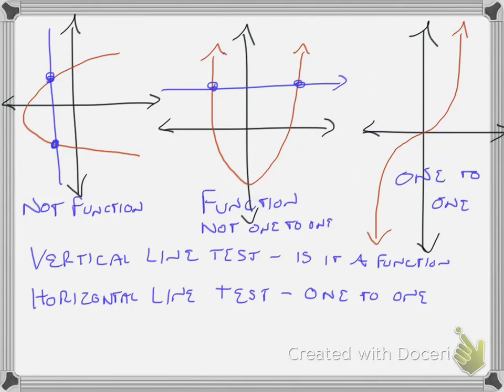So generally, if it passes both the vertical line test and the horizontal line test, it is one-to-one.